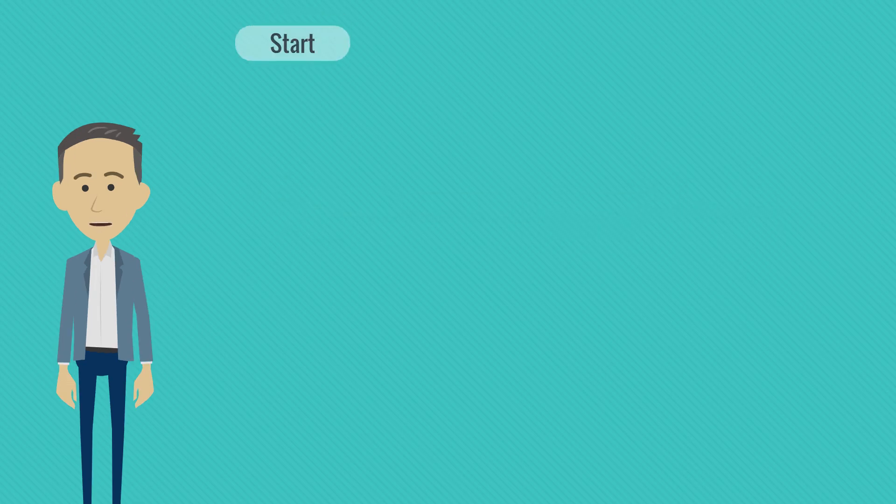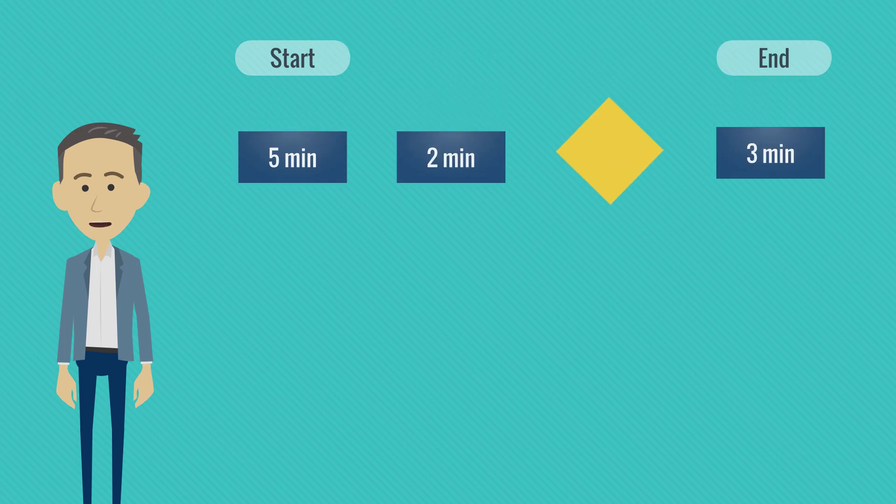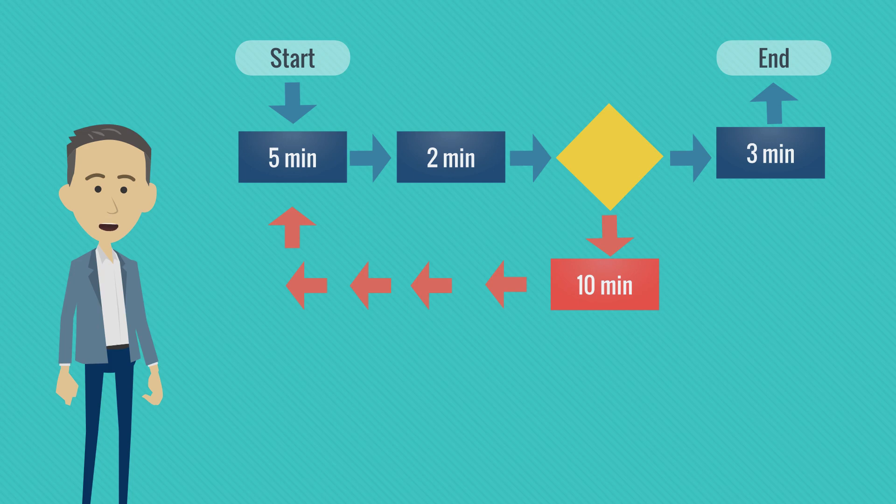Every process should have one start, at least one end, couple of process steps, decision points, and in case things go bad, rework steps. We could also have shorter or longer waiting times. While for decisions you should know how much of the volume goes on one path and how much on the other.